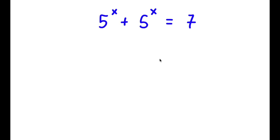In this problem, I have 5 to the power of x plus 5 to the power of x is equal to 7. To solve this, I'm going to first start by factoring out 5 to the power of x.